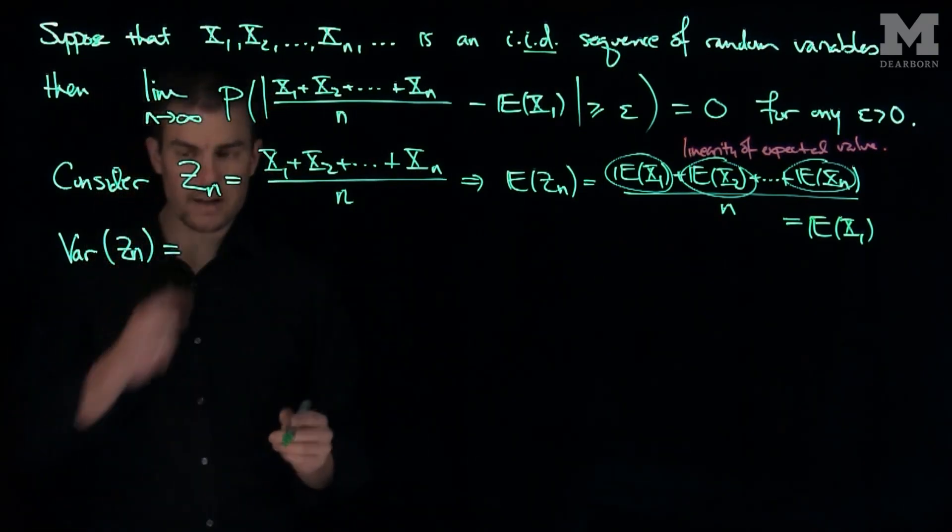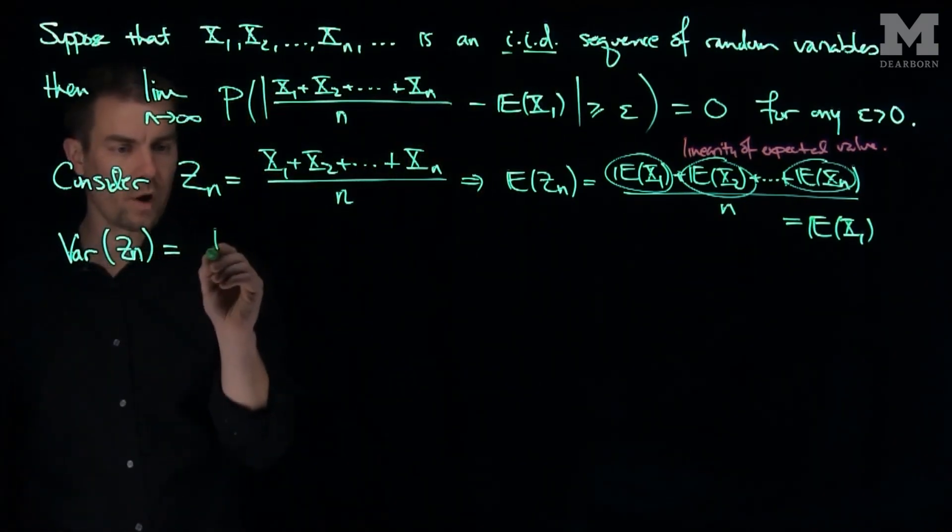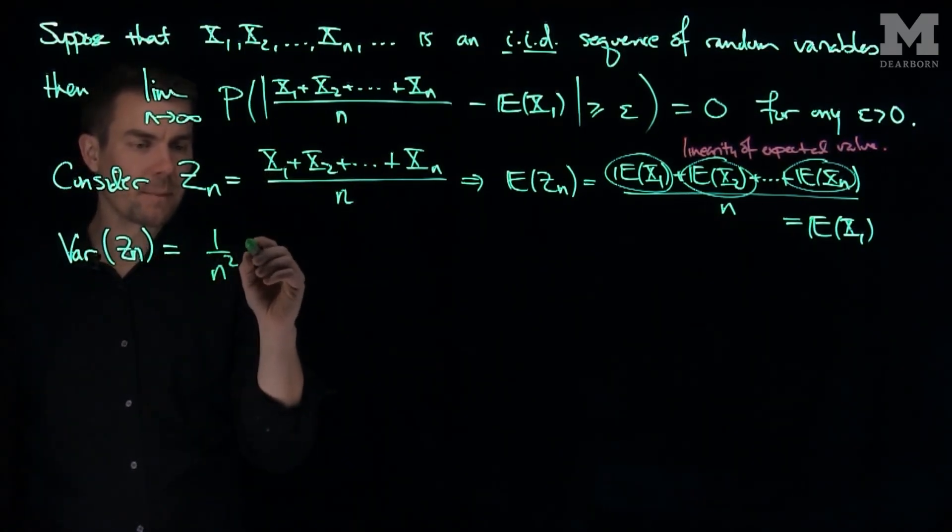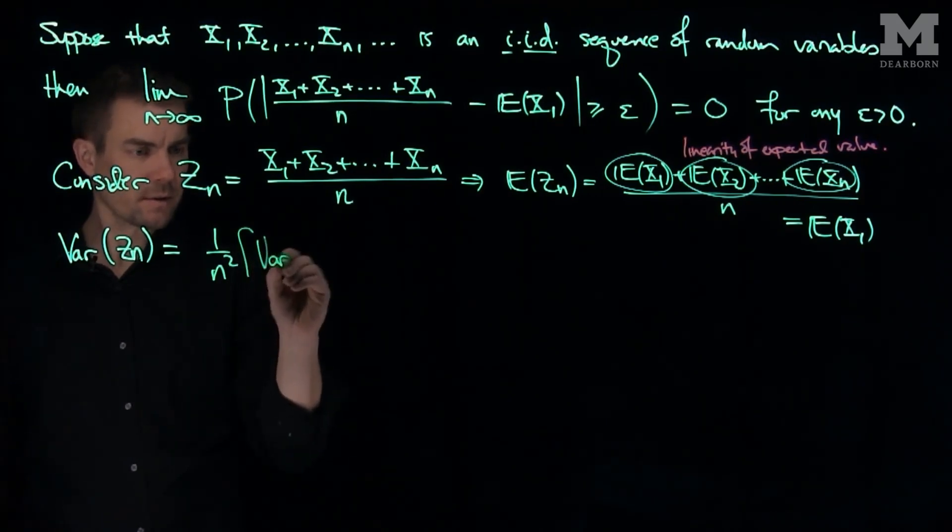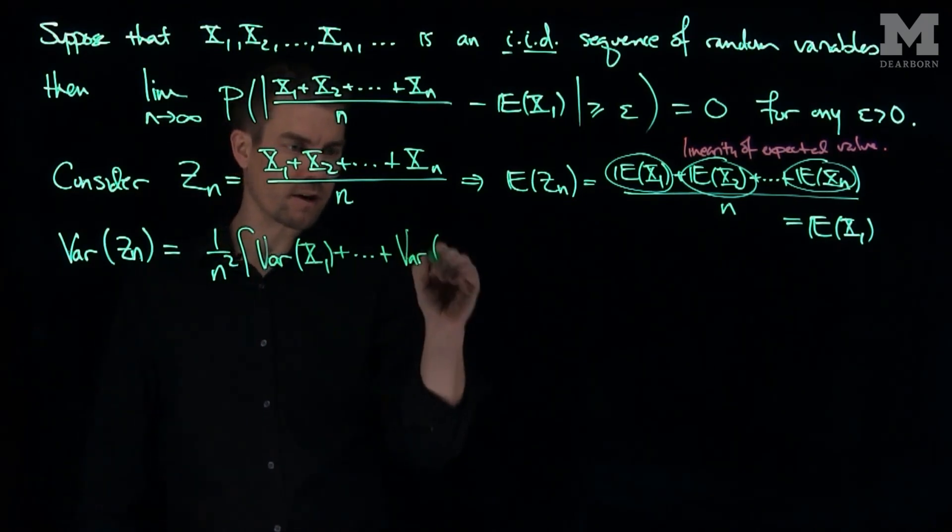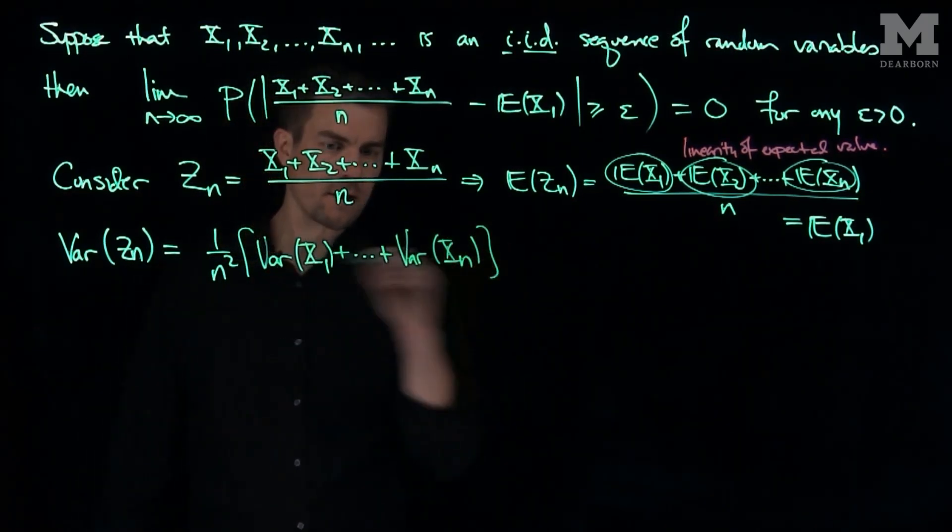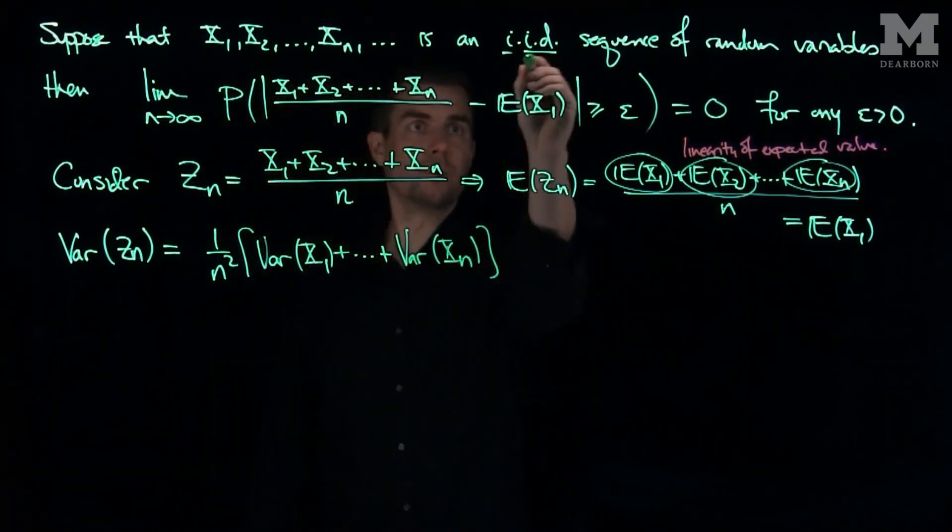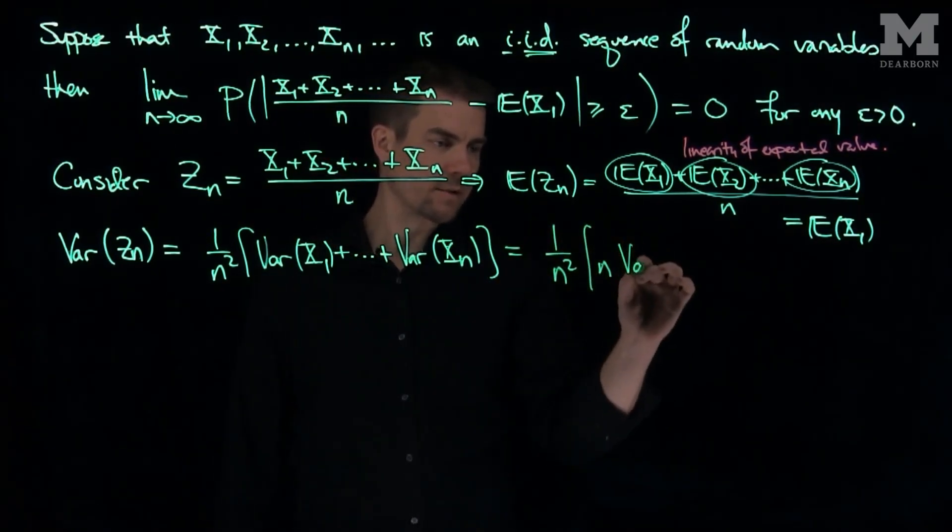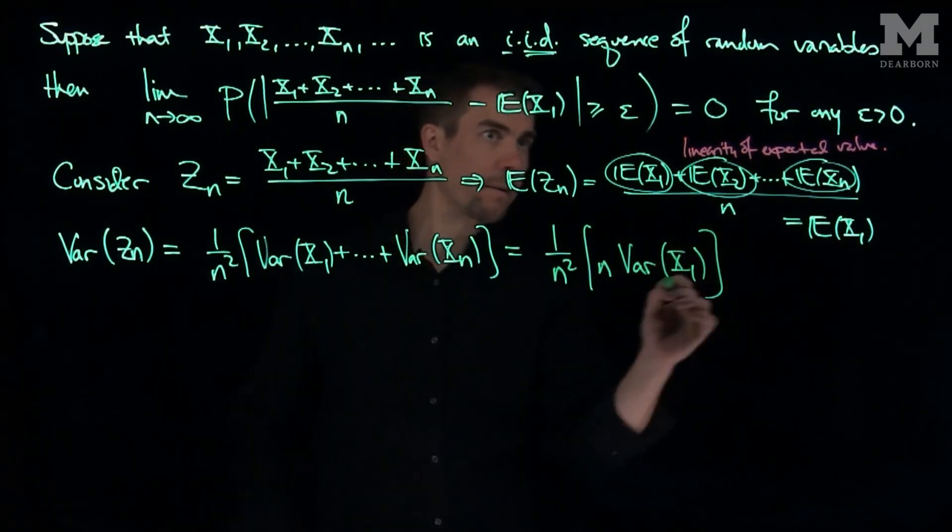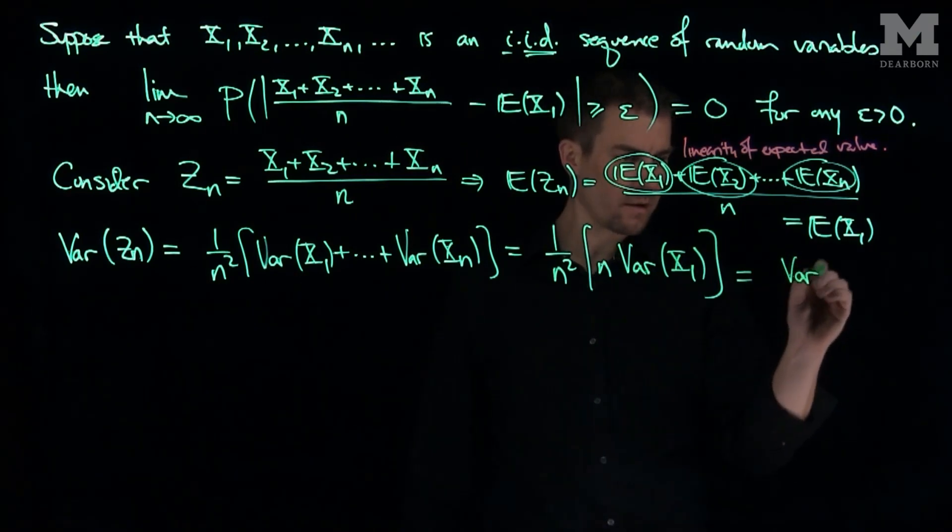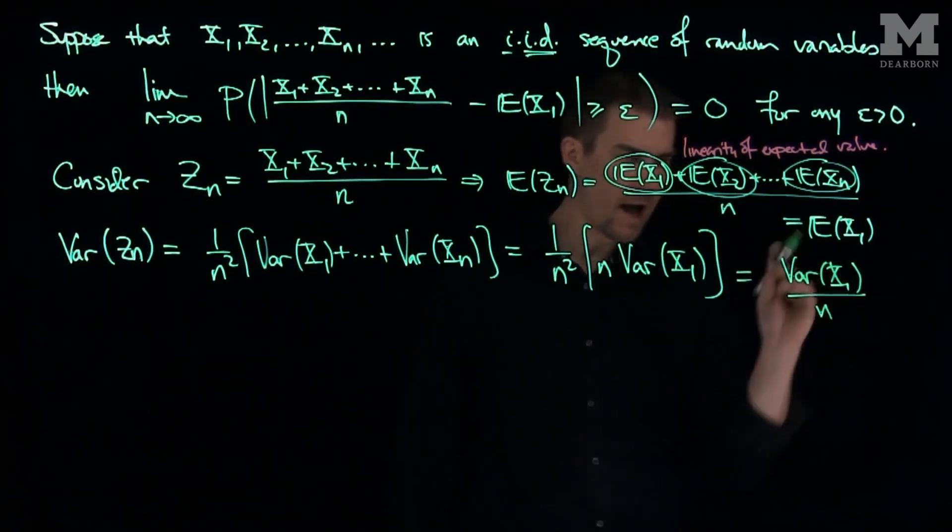Now the variance of zn, by the same principle, by the fact that they're independent, is going to be 1 over n squared. I can pull that constant out. And then I'm going to have the sum of the variances, the variance of x1. Again, that follows from the independence of these random variables, the variance of xn. And now, since they have the same distribution, I can write this as 1 over n squared, and then n times the variance of x1. And so this will be equal to the variance of x1 over n.